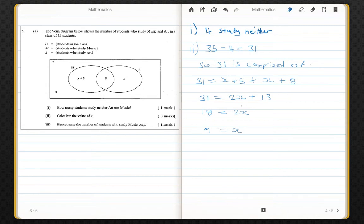This unknown x is simply equal to 9, and that is Part 2 complete. We move on now to Part 3: Hence state the number of students who study music only.